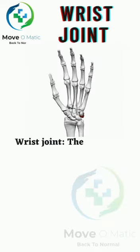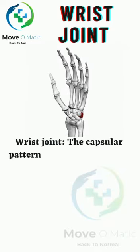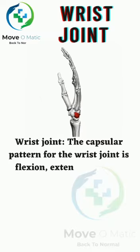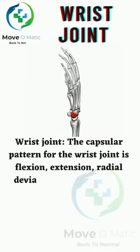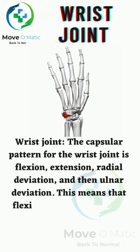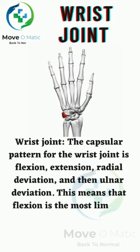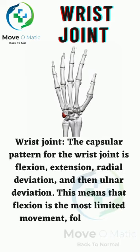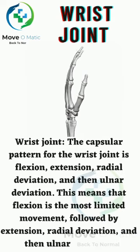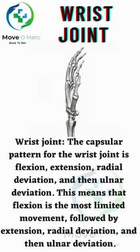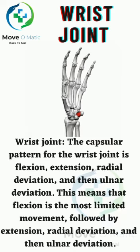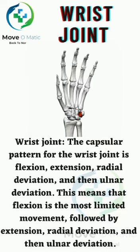Wrist joint: The capsular pattern for the wrist joint is flexion, extension, radial deviation, and then ulnar deviation. This means that flexion is the most limited movement, followed by extension, radial deviation, and then ulnar deviation.